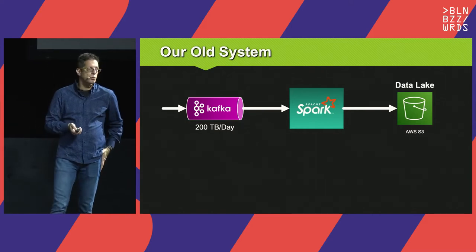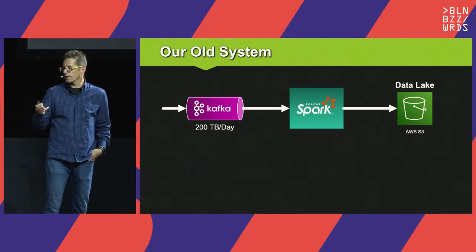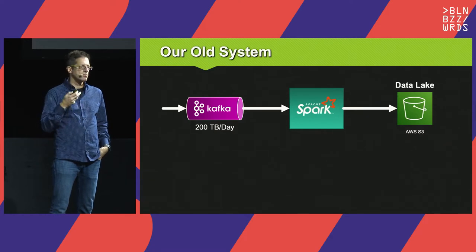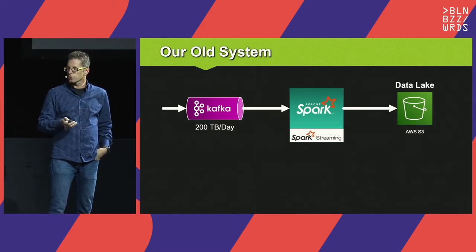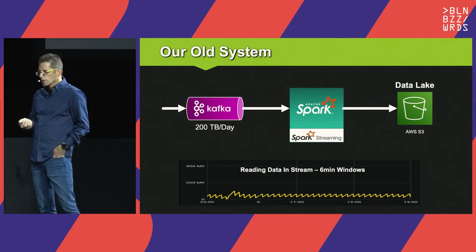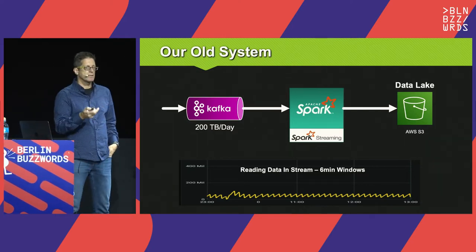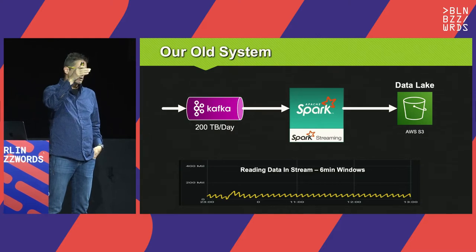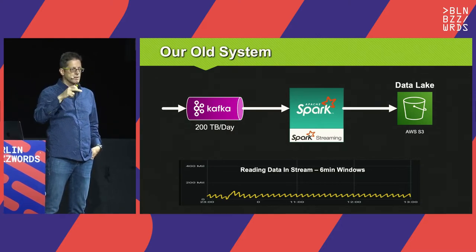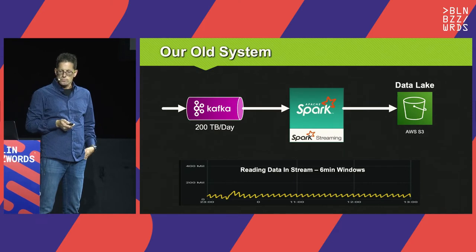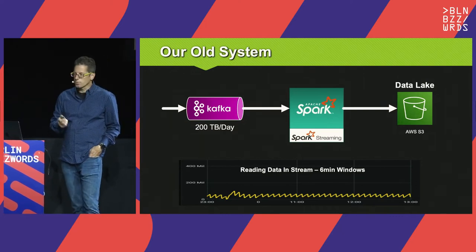When you look at our old system, the way we used to read data from Kafka was: for each topic, we would start a Spark cluster that would read in a streaming fashion from Kafka and store it into our data lake, which is S3. The cluster would work in six-minute increments. You can see the sawtooth graph — data keeps piling up, then the cluster reads and the amount of data waiting drops, then it piles up again. This was working really well.